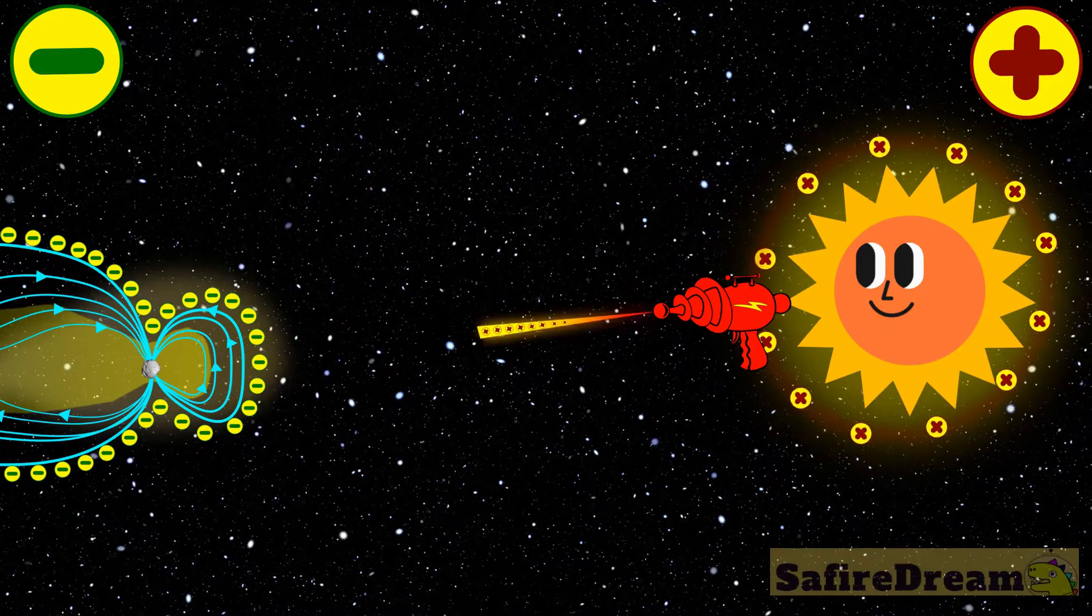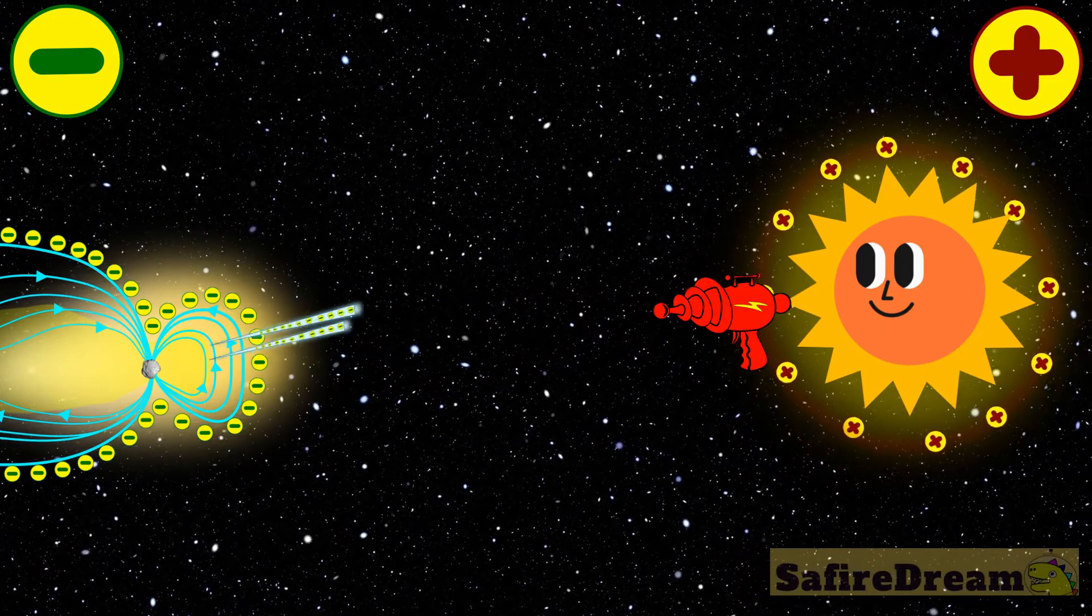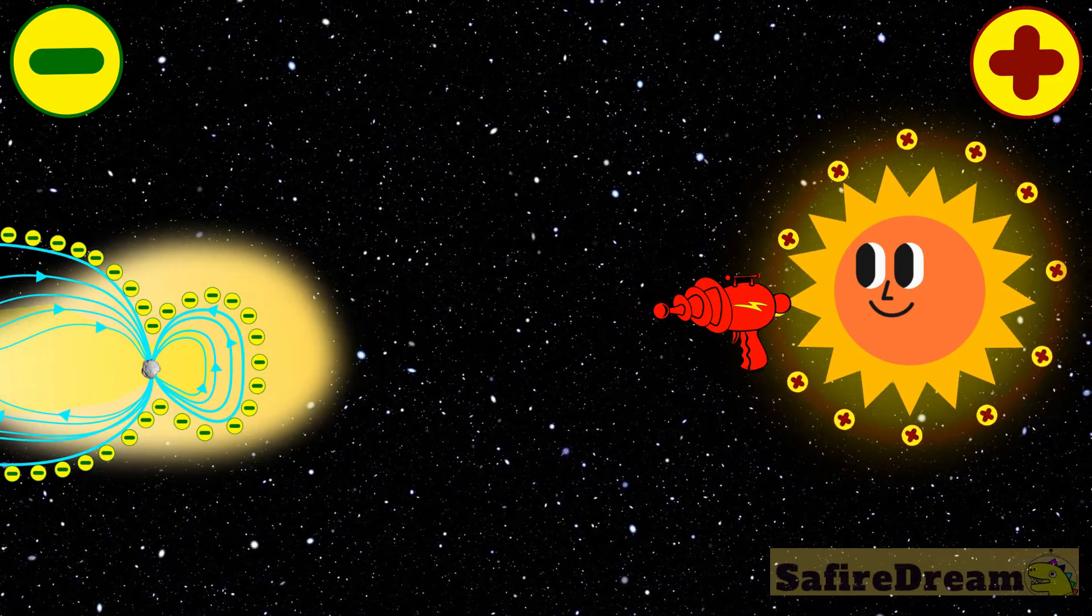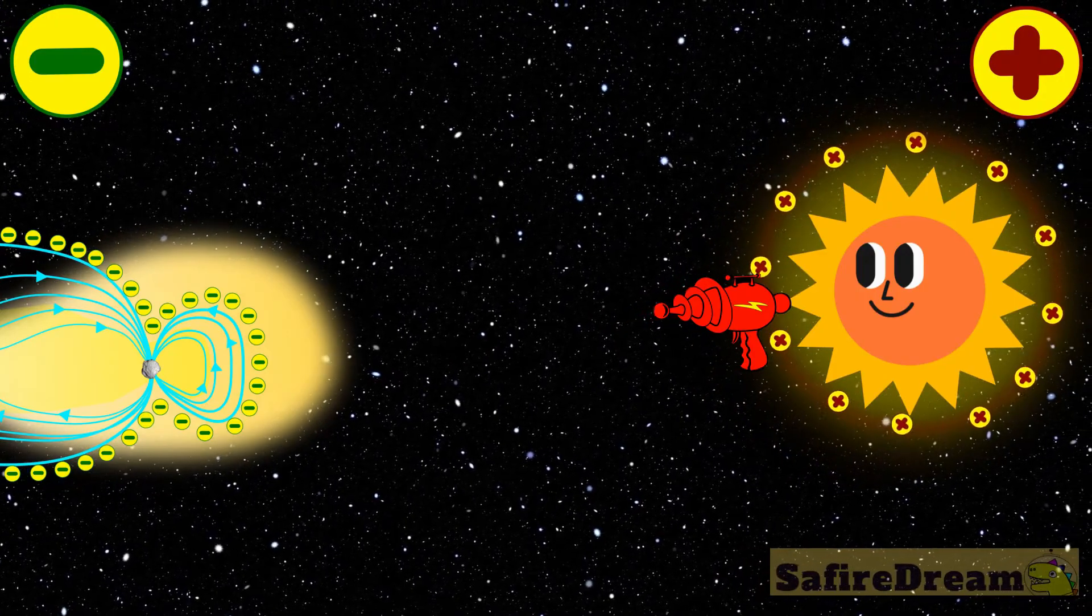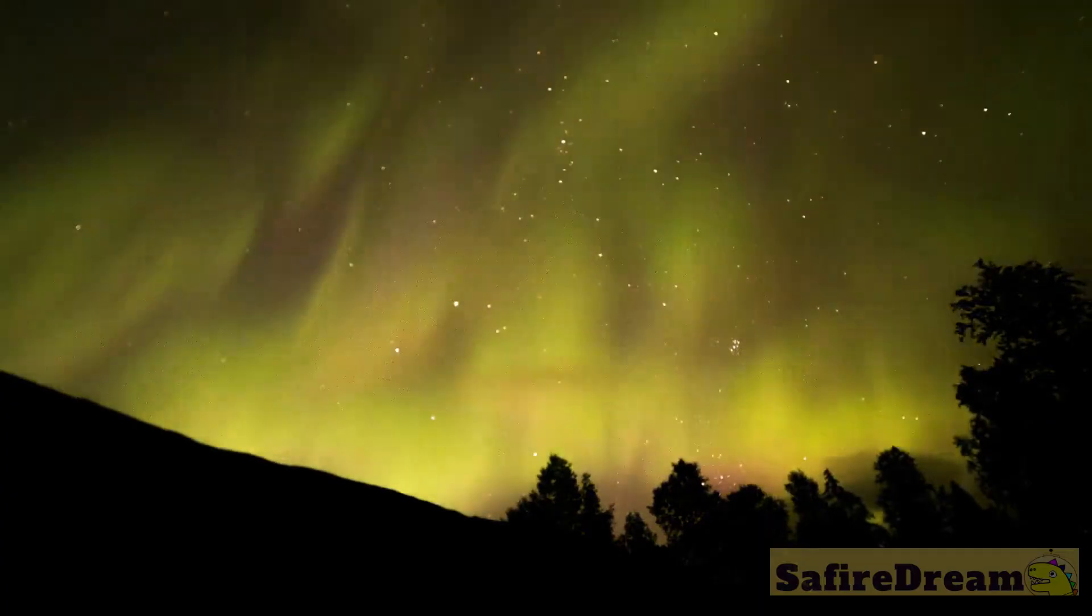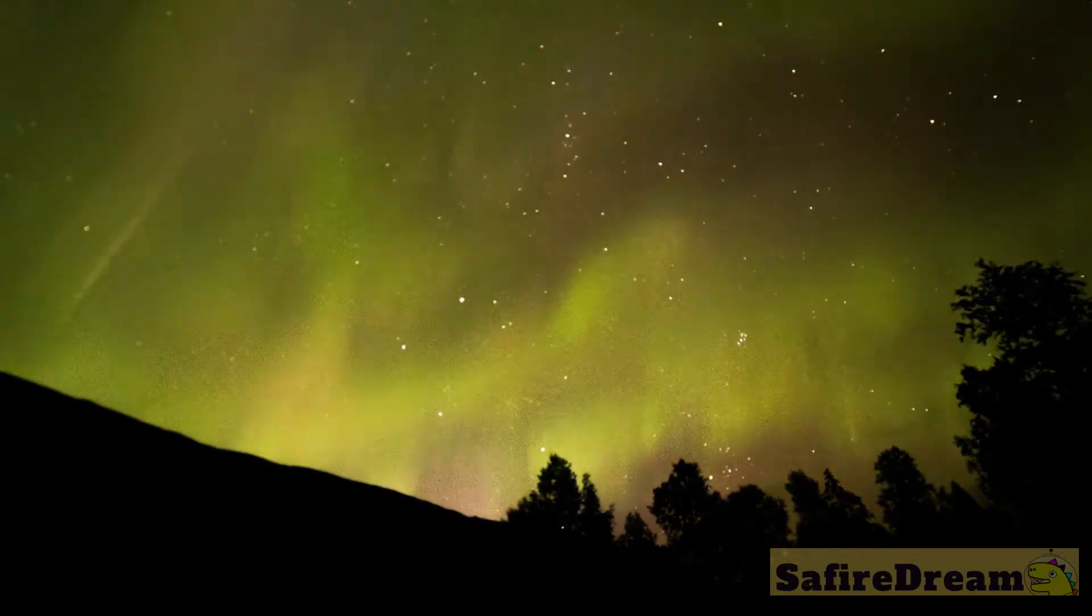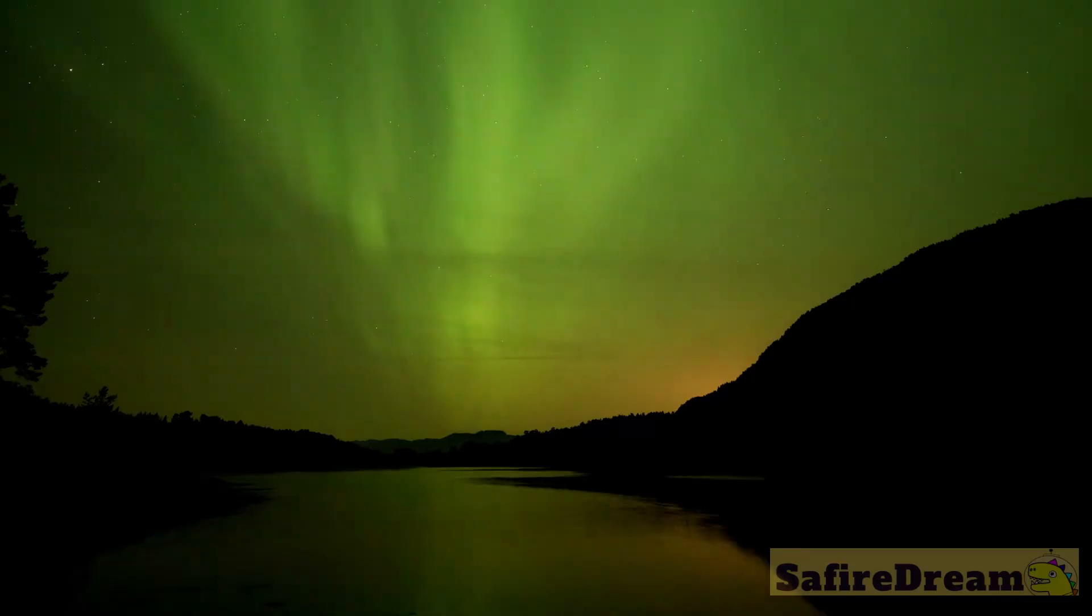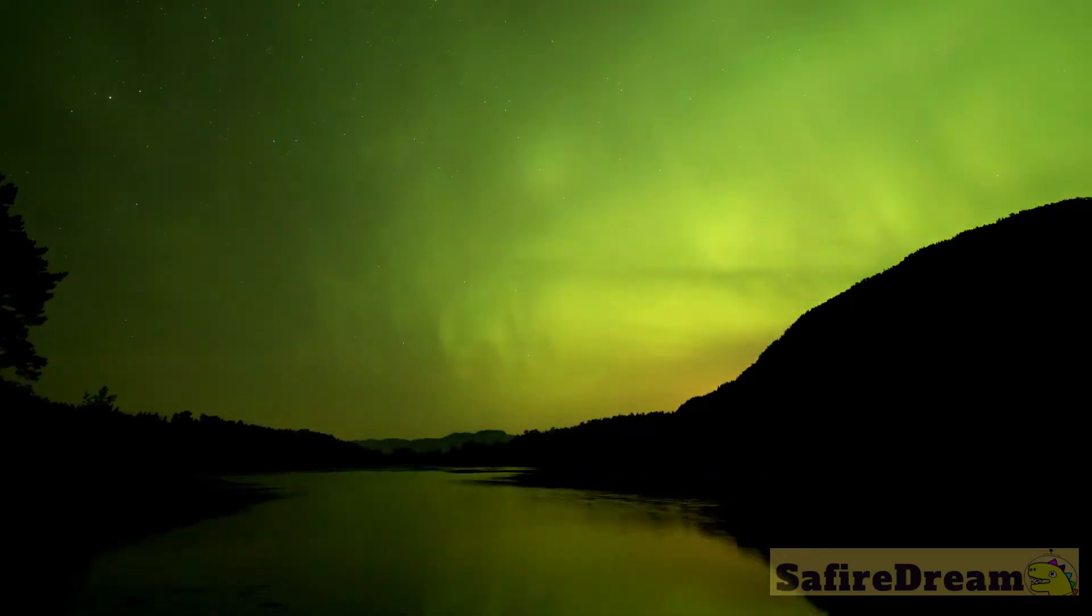When the negatively charged comet comes close enough to the positively charged sun, it gets electrically stressed, and its sheath starts to glow. On Earth, you can see part of this glow dance in the sky as the North and South Pole auroras. What we see as coma and tail is this glowing sheath.